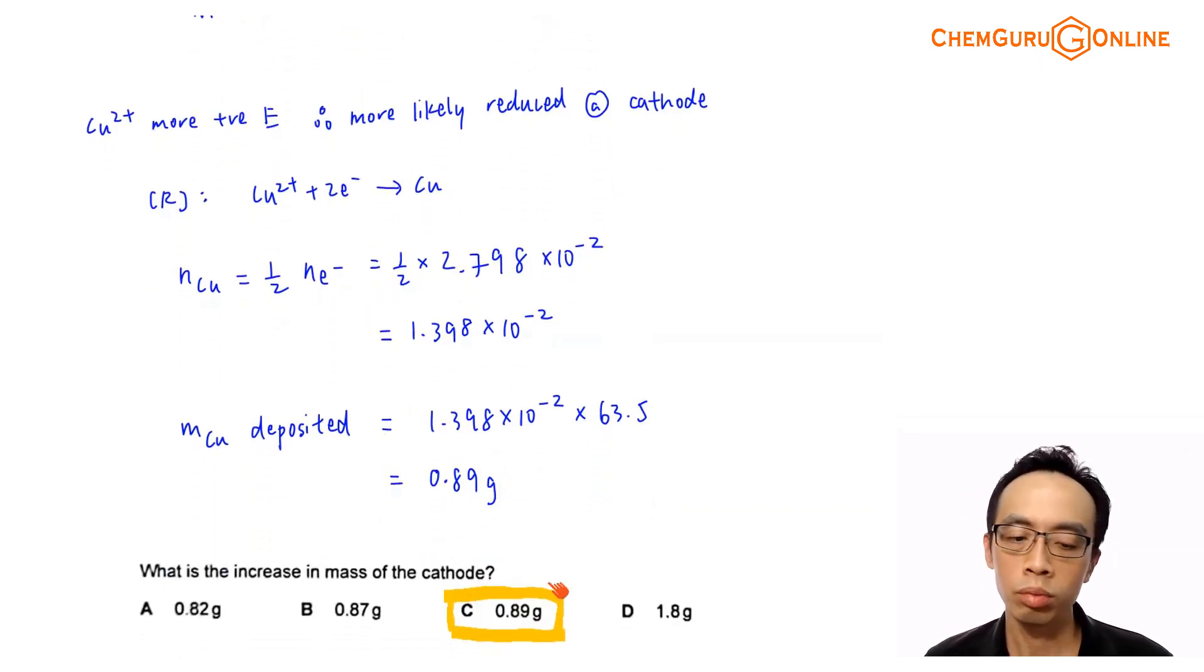Therefore the answer to this question will be C, 0.89 gram. That was the discussion involving this question for electrolysis. If you have learned something useful, please give me the thumbs up, like this video and subscribe to my YouTube channel for more weekly video lessons. That's all for now, I'll see you next week.